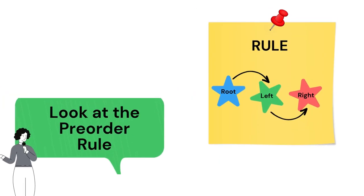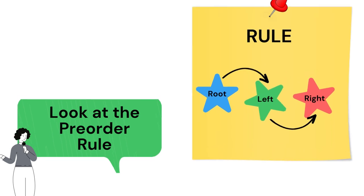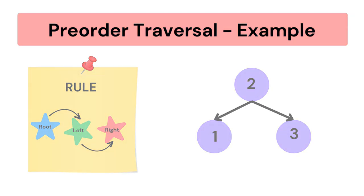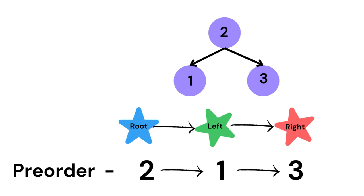Let us look at the pre-order rule. In pre-order, we have to go through the root node first, then the left subtree, and then the right subtree. Consider the BST with 2 as its head and 1 and 3 as its left and right subtrees. Pre-order traversal of this BST will be: first we visit the root node which is 2, then 1 which is the left subtree, then 3 which is the right subtree. So the order will be 2, 1, 3.